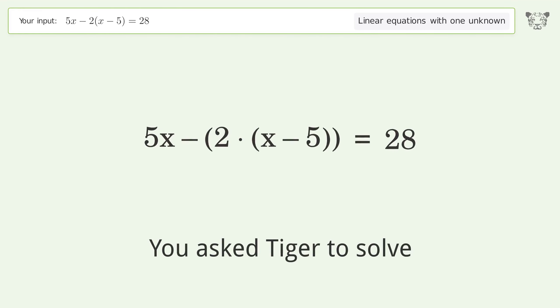You asked Tiger to solve 5x - 2(x - 5) = 28. This deals with linear equations with one unknown. The final result is x equals 6.